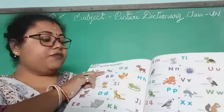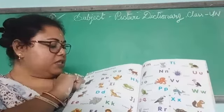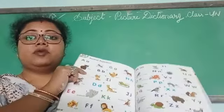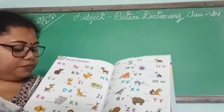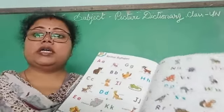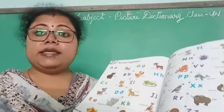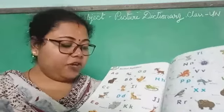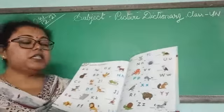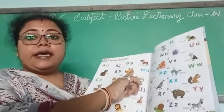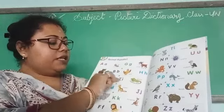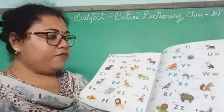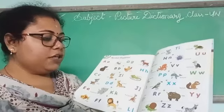A for Ant. Next one — B for Bear. Then C for Cat. Then D for Dog. Then E for Elephant. F for Fish. Then G for Goat. H for Hen. Then I for Iguana. Then J for Jackal. K for Kangaroo.